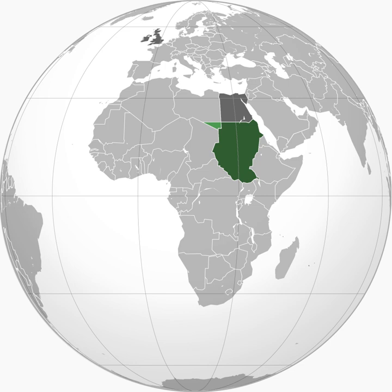Between 1914 and 1922, Egypt and thus the Sudan were formally a part of the British Empire. After Egyptian independence in 1922, Britain gradually assumed more control of the condominium, edging out Egypt almost completely by 1924. Increasing Egyptian dissatisfaction with this arrangement came to a head after the overthrow of the Egyptian monarch in 1952. On 1 January 1956, Egypt and Britain ceded Sudan its independence.